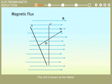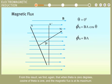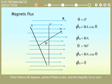From this result we find, again, that when theta is zero degrees, cosine of theta is one, and the magnetic flux is at its maximum. When theta is 90 degrees, cosine of theta is zero, and the magnetic flux is zero.